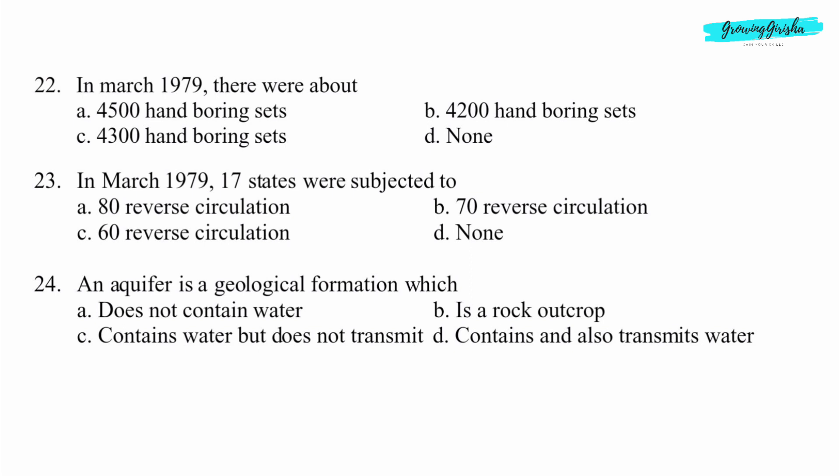Question 22. In March 1979, there were about? Option A: 4500 hand boring sets.